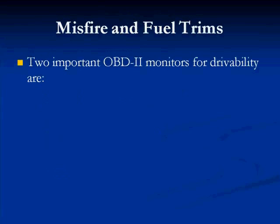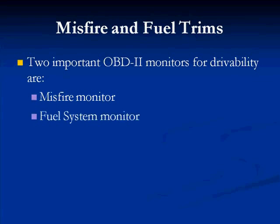Two of the main monitors are misfire and fuel trim — they're the most important for drivability. The misfire monitor is very important when dealing with drivability because the computer uses software to determine how many misfires and where the misfire is located, in which cylinder or cylinders.